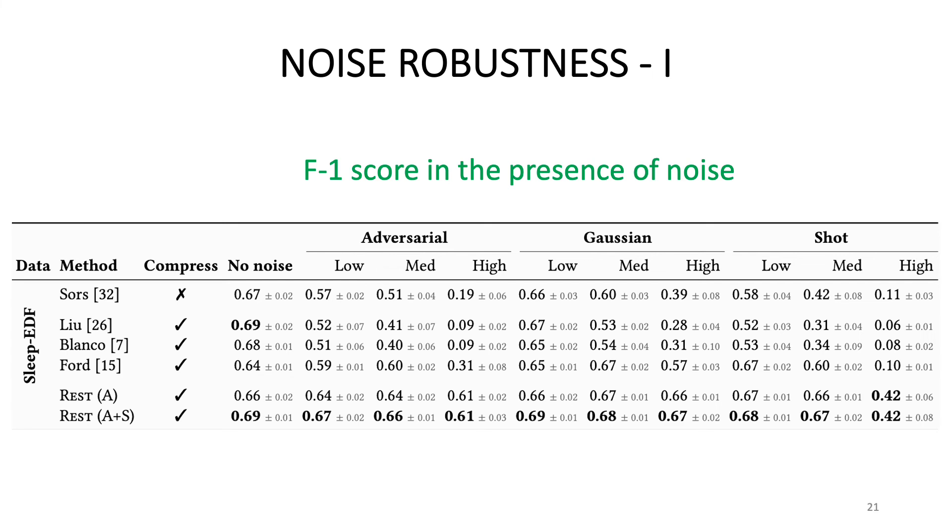Let's start by looking at the noise robustness results. On the table, we highlight the F1 score obtained by the state-of-the-art model under no noise setting in green. This model achieves an F1 score of 0.67 when there is no noise in the input EEG signal. However, when there is high adversarial noise, this F1 score falls to 0.19. When high Gaussian noise is present, it falls to 0.39. When there is high short noise, it falls down to 0.11. On the other hand, when we train our model using the REST strategy, our accuracies are as follows. Under high adversarial noise, we get an F1 score of 0.61. Under high Gaussian noise, we get 0.67. And with high short noise, we get 0.42. So you can see that the REST model imparts a level of noise robustness.